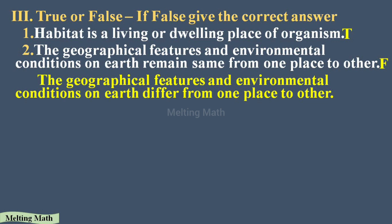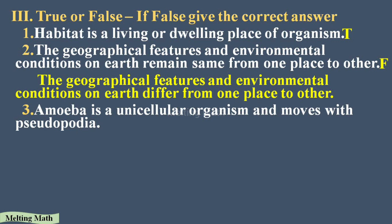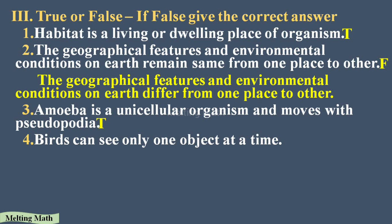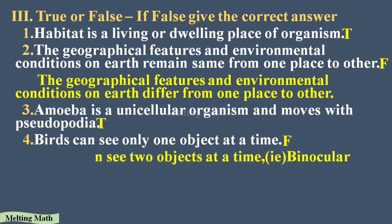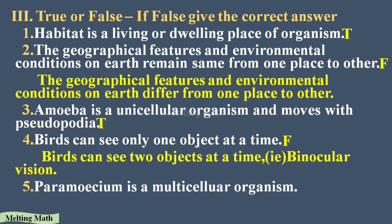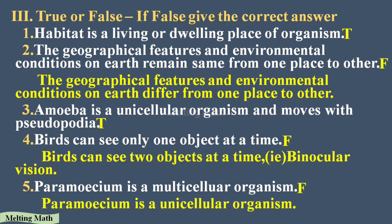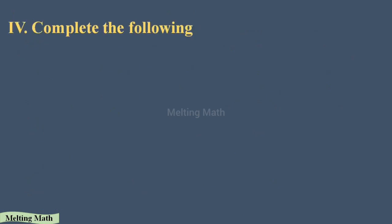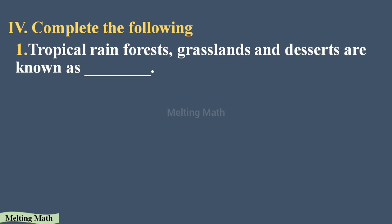True or false question three: amoeba is a unicellular organism and moves with the help of pseudopodia — true. Question four: birds can see only one object at a time — false. Birds can see two objects at a time; we call it binocular vision, as discussed in the previous video. Question five: Paramecium is a multicellular organism — false. It is a unicellular organism.